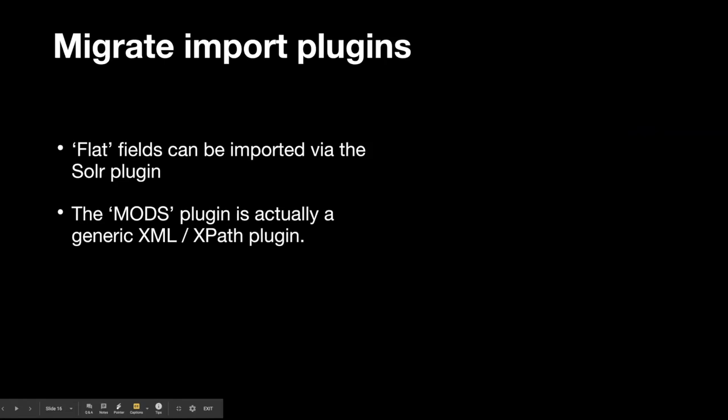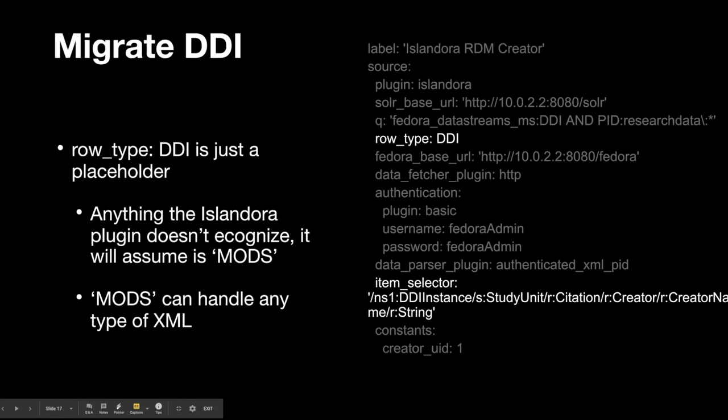So, the actual migrate import plugin. Flat fields can still be imported using Solr — very easy. The MODS row type plugin is a little bit of a misnomer — it's actually a generic XML/XPath plugin. Here's a snippet from a YML file for importing something out of a DDI. I didn't actually define a row type called DDI, but if you use any stream that isn't Solr or one for which there's a preexisting plugin, it will just default to the MODS plugin, which lets you specify an XPath expression to reach into your XML data to get the base part of the element that you want.